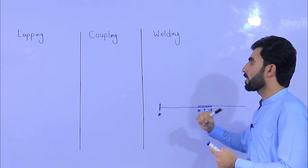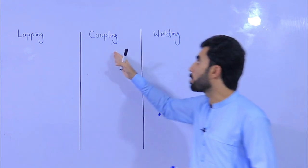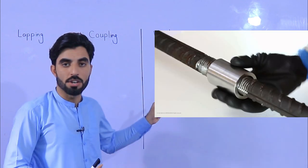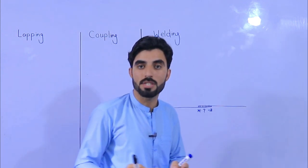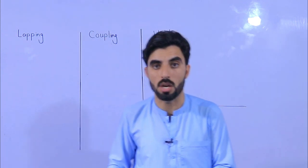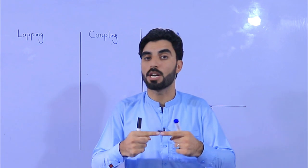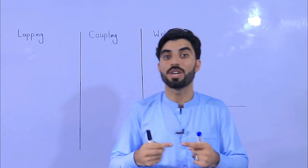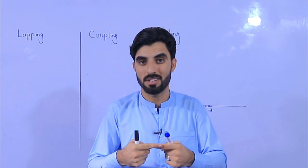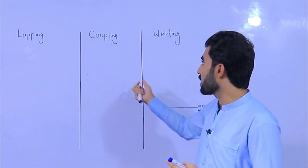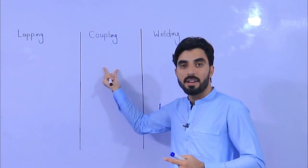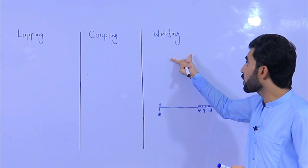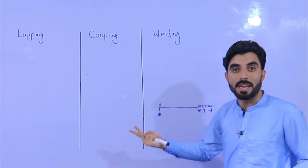Overlapping one steel bar to another is called lapping. The second method is coupling. As you can see here, this is a picture of a coupler. This is advanced technology for joining one steel bar to another — we don't need to waste steel because coupling is the advanced technology.